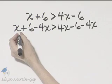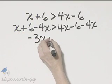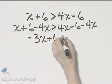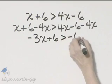On the left side, I have 1x minus 4x. That's negative 3x plus 6 greater than—here the 4x is subtracted out and I have negative 6.